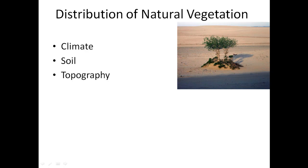Topography also plays a very important role in the distribution of natural vegetation. If you see the topography of India, it varies from region to region: northern India has a mountainous region, the northeastern part is hilly, and the southern part has the Deccan Plateau. Based on such topography, there will be differences in the distribution of natural vegetation.